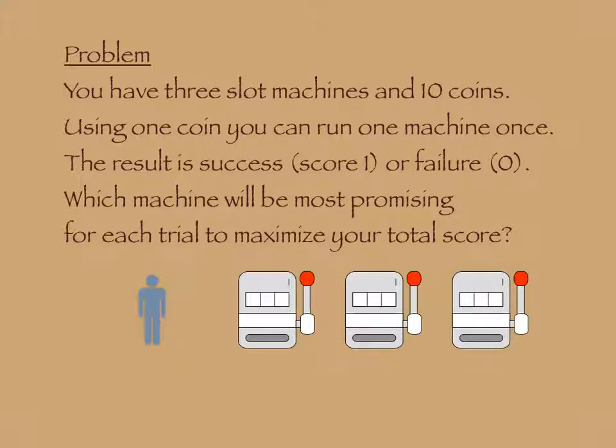Using 1 coin, you can run 1 machine once. The result is either success (score 1) or failure (score 0). Which machine will be most promising for each trial to maximize your total score?